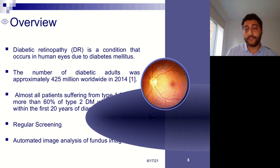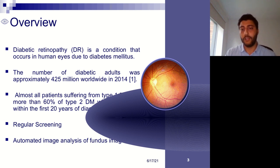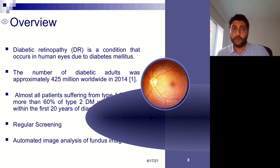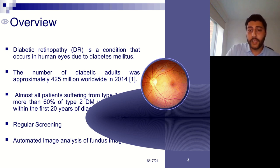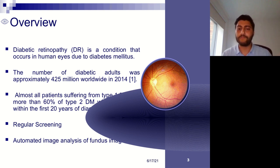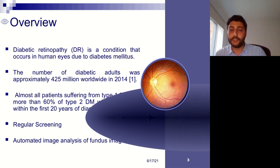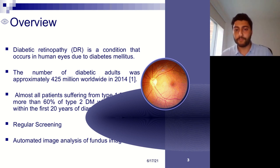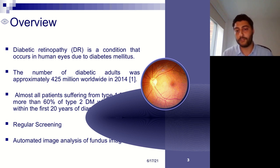If the disease is left untreated or undiagnosed at an early stage, it may cause blindness or loss of vision. Statistically, according to the World Health Organization, the number of diabetic adults in 2014 was approximately 425 million worldwide. Almost all patients with type 1 diabetes mellitus, and more than 60% of patients with type 2, will develop diabetic retinopathy within the first 20 years of their diagnosis.